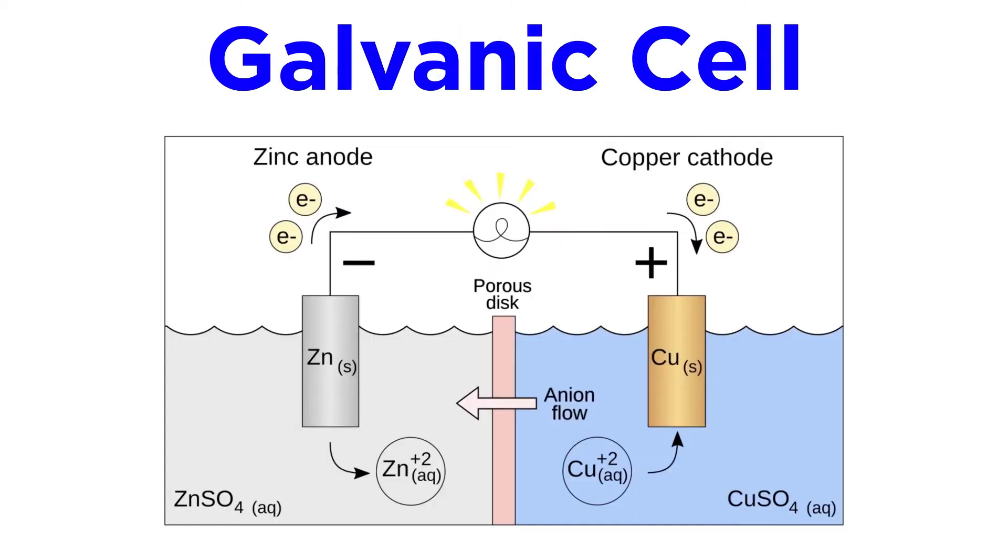To construct a galvanic cell in the laboratory, we need to set up the oxidation and reduction reactions separately and connect them together. These two sides are what we call half-cells. The electrons are produced by oxidation on the left side, which is called the anode, where neutral metal atoms donate electrons to become ions and join the solution.